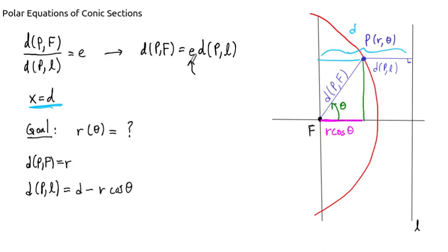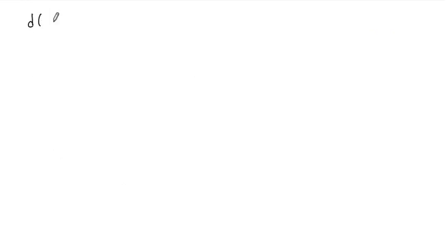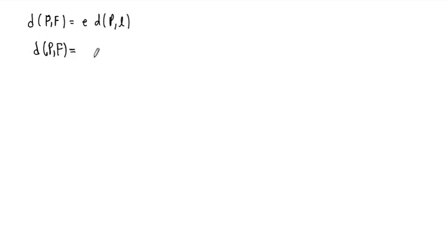Now we need to bring in eccentricity. We need to multiply the second equation by E and solve for R. Our equation is: D of PF equals E times the distance between the point and the directrix. In polar coordinates with the focus at the pole, D of PF is just R, and the distance between the point and the directrix is D minus R·cosine(θ).